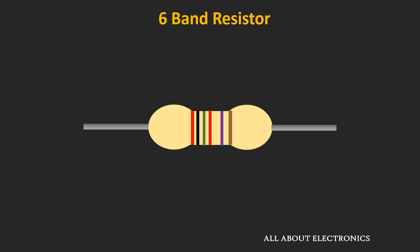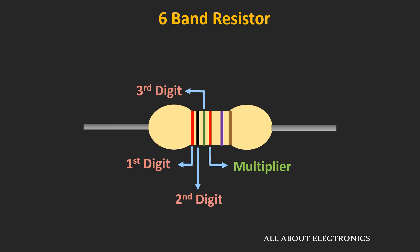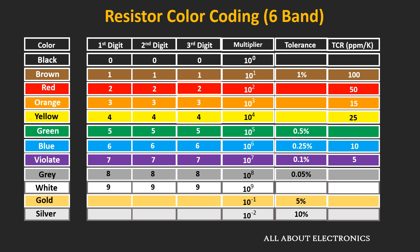6-band resistors are not generally used in general-purpose applications, but they are used for specific and military applications. In a 6-band resistor, the first 3 color bands define the first 3 digits of the resistor's value. The 4th band represents the multiplying factor, the 5th band represents the tolerance value, and the last 6th color band defines the temperature coefficient of resistance. A reference table provides all these values based on color.